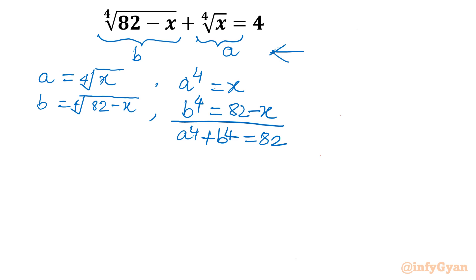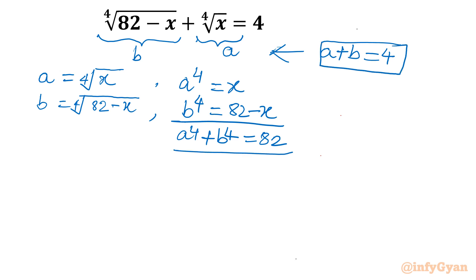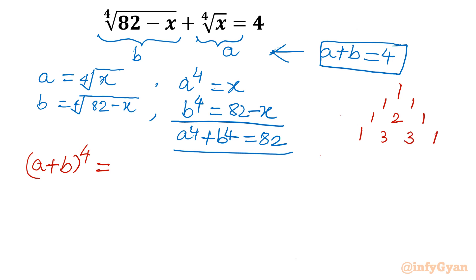From the original equation we conclude a plus b equals 4. So we know two things: a⁴ plus b⁴ equals 82, and a plus b equals 4. Now I am going to write the expansion of (a plus b) to the power 4. Using Pascal's triangle — 1, 1; 1, 2, 1; 1, 3, 3, 1; 1, 4, 6, 4, 1 — these are the coefficients we need.